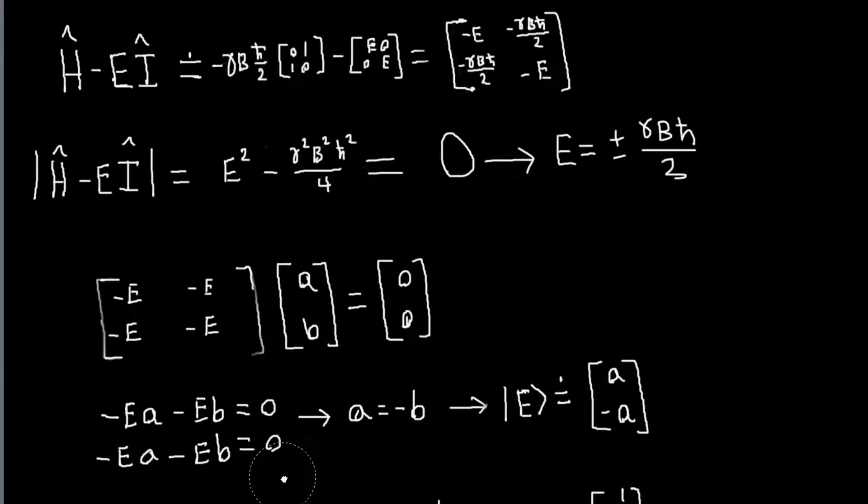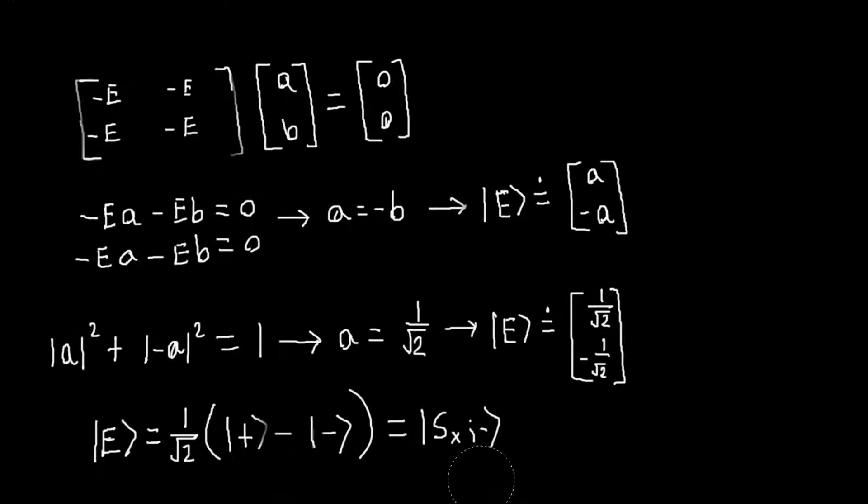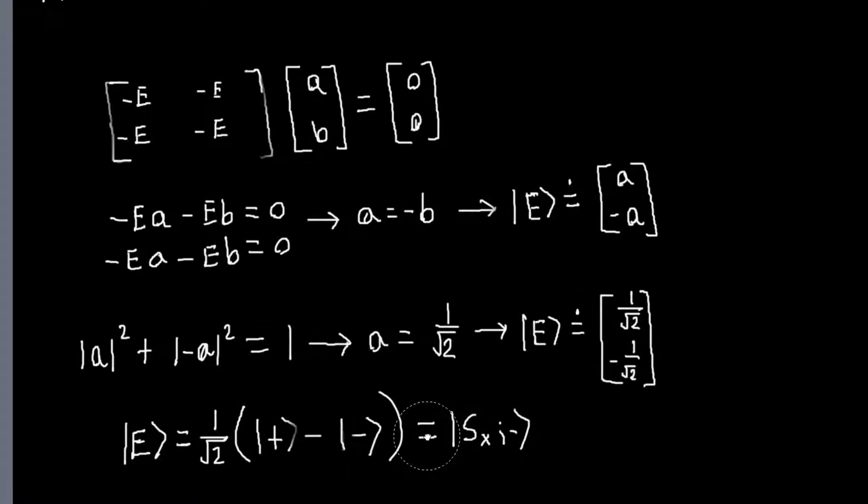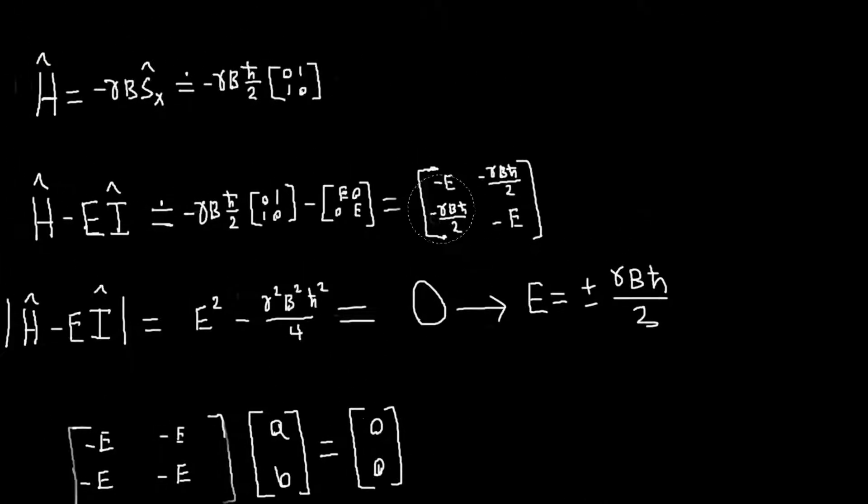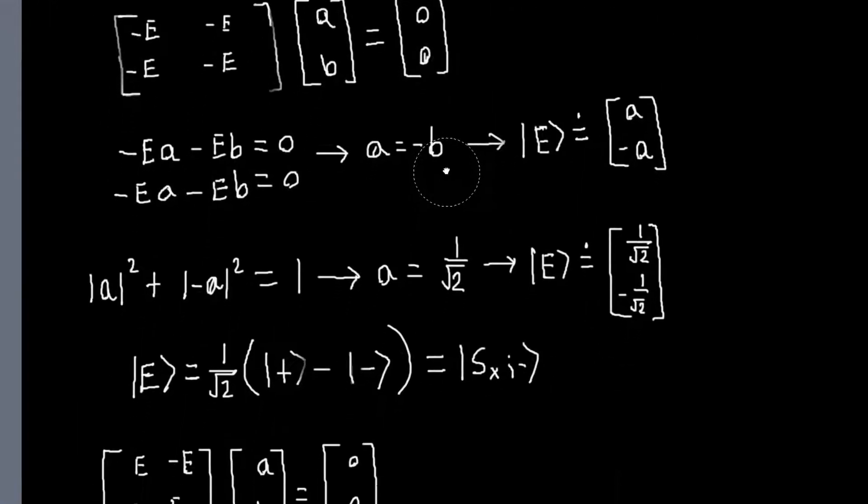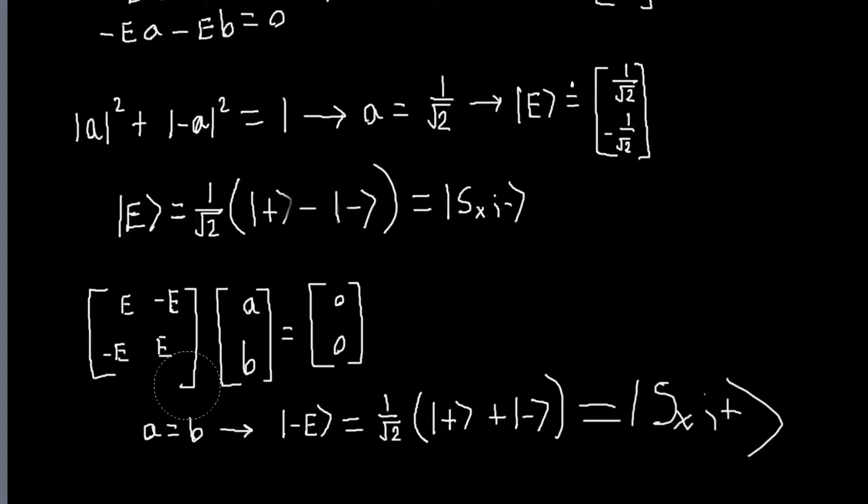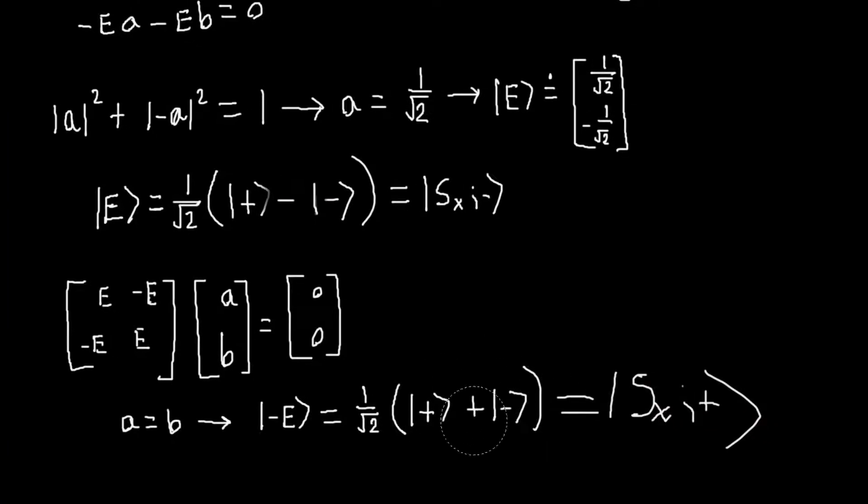So we get what we expected. One of our eigenvectors of this Hamiltonian is just the Sx minus ket. And similarly, if we take this thing and we plug in the minus value, we get this matrix. And this tells us that A equals B. So that just tells us that our basis state is an equal linear combination of our two original basis vectors. And of course, this is Sx plus.